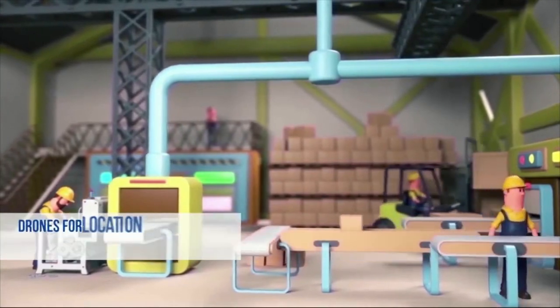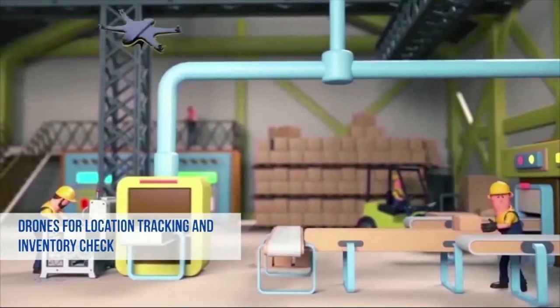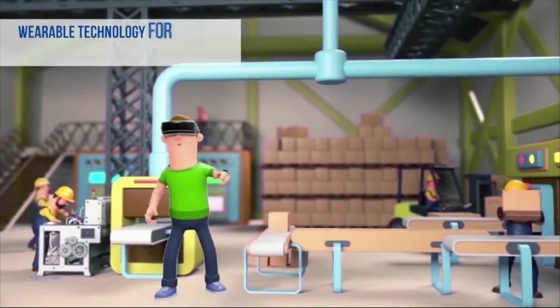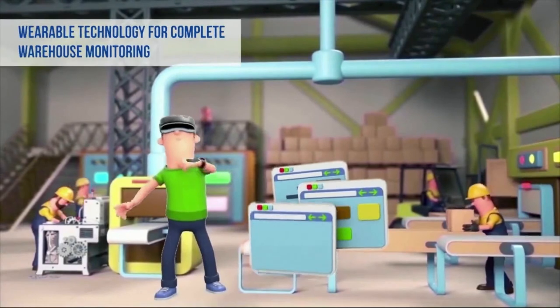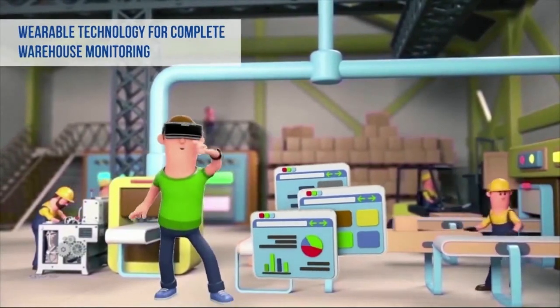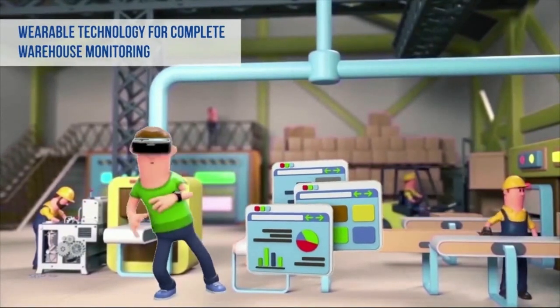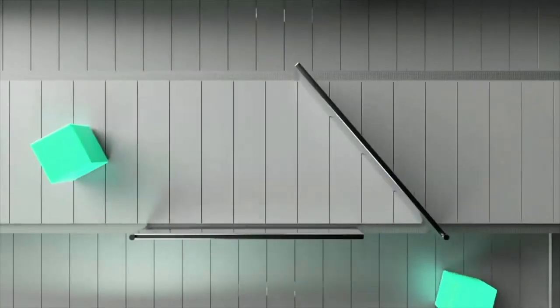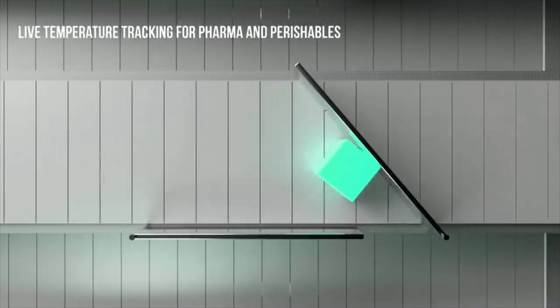Drones integrated for warehouse location tracking and inventory check. Wearable technology at play like augmented reality to virtually display freight and their details which can be mapped to ULD weight and contours. Pharma and perishables are mapped with temperature sensors to monitor product efficacy.